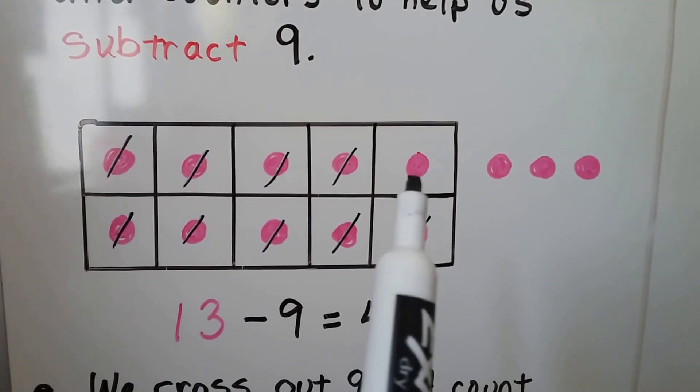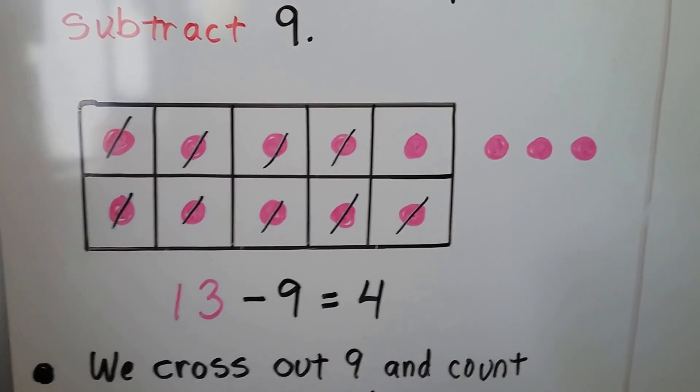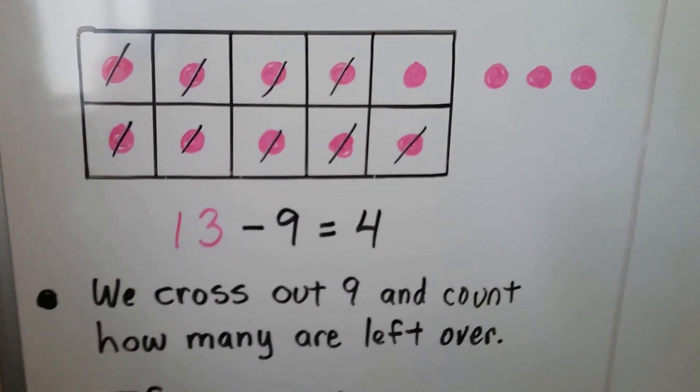We can see there's 1 left in the 10 frame and 3 on the outside. That's 4. So 13 minus 9 is 4. We cross out 9 and count how many are left over.